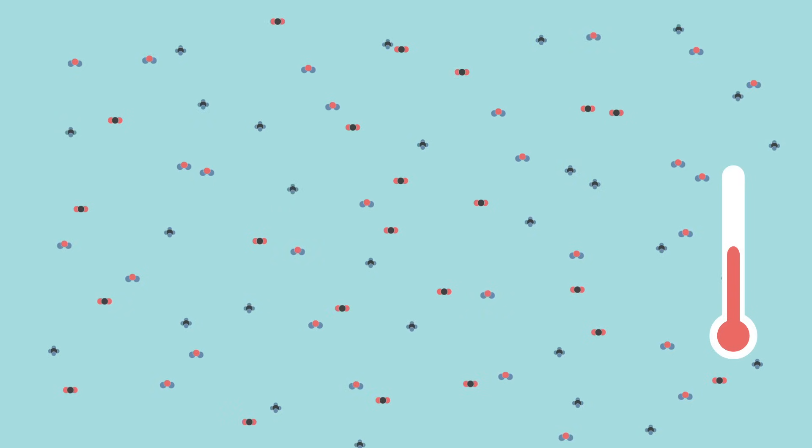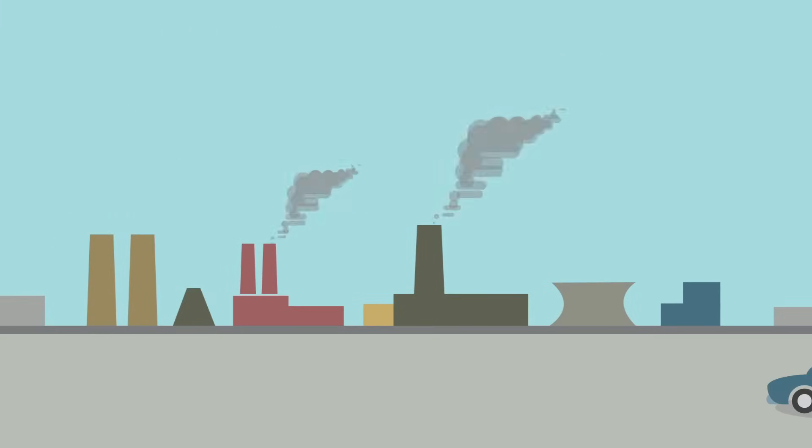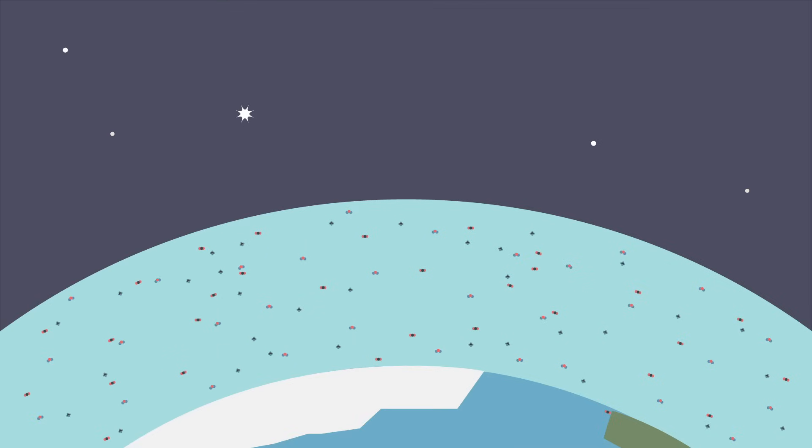But some human activities are changing Earth's natural greenhouse effect. For example, burning fossil fuels like coal and oil releases more carbon dioxide into our atmosphere. These extra greenhouse gases can cause the atmosphere to trap more and more heat, leading to a warmer Earth.